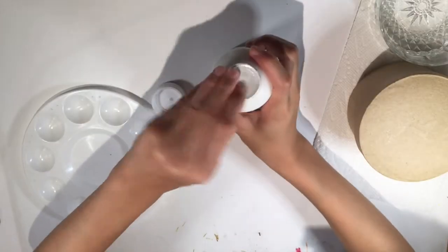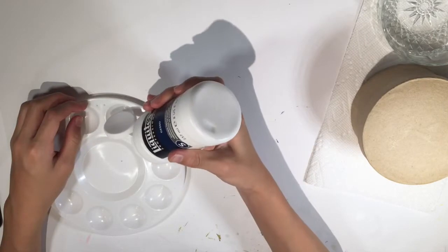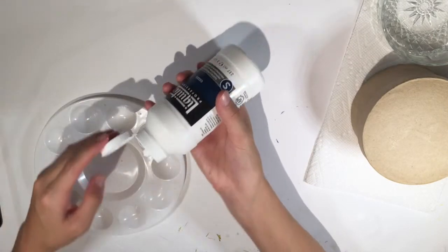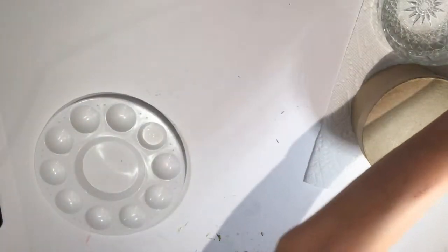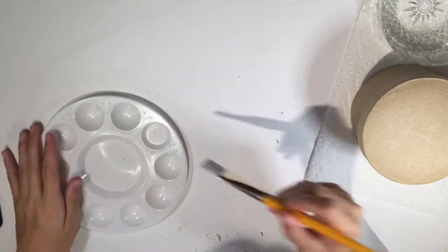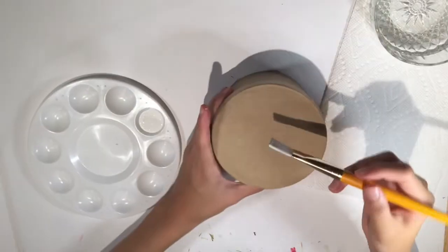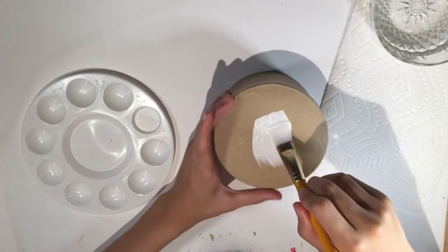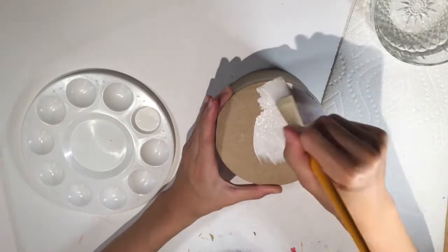So I'm gonna start off by gessoing this entire cardboard box. Now this is my first time using gesso, so I'm sort of just experimenting around. If you don't know what gesso is, it's literally just a white coat that is used to make a first layer so that the paint is more vibrant, since this box is kind of brown and dark. So here I am just gessoing away.